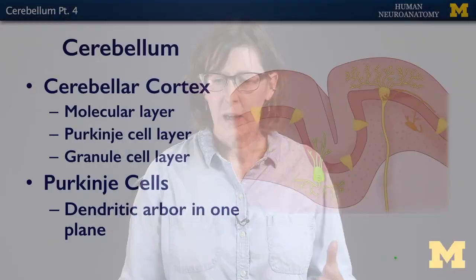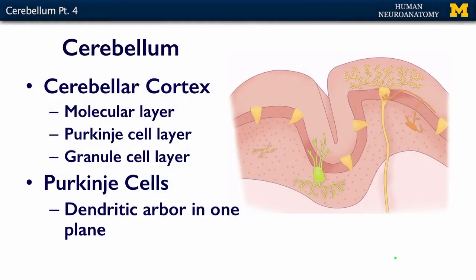As I mentioned in the very beginning of this lecture, the cerebellar cortex has about 50% of your entire brain's neurons. We couldn't put them all in this illustration, but they're here in what's called the granule cell layer. The cerebellar cortex basically has three layers: an outer molecular layer, an intermediate Purkinje cell layer, and an inner granule cell layer. This is where the cells are really, really dense — tons and tons of cells.